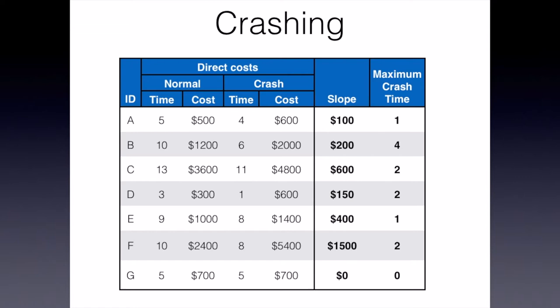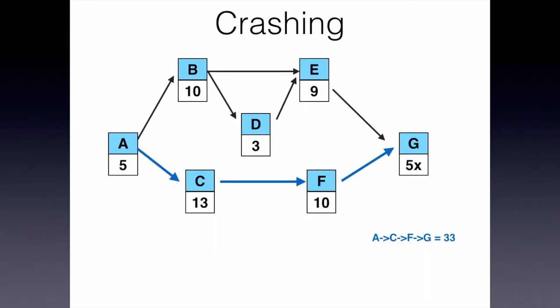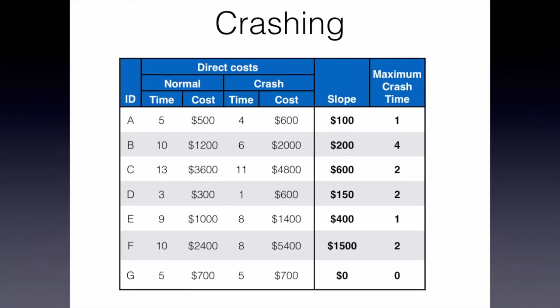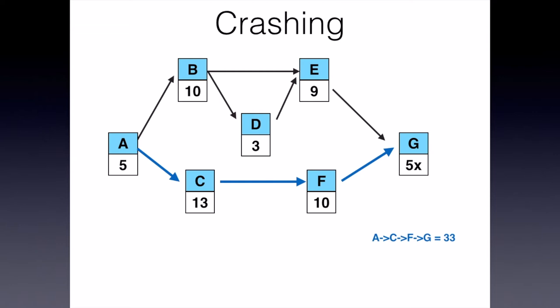If we now look at these tasks in our project network, I've put out the relationships — these are all simple finish-to-start relationships for this example — and put their durations in the box underneath the task ID. You'll notice for task G I have a notation of 5x, because we cannot crash or reduce this anymore. I want to put some sort of notation, either when I've crashed something once and could only crash it once, or when it is not crashable at all — I'll put that little x after the duration to indicate you cannot consider this any longer for reducing the project time.